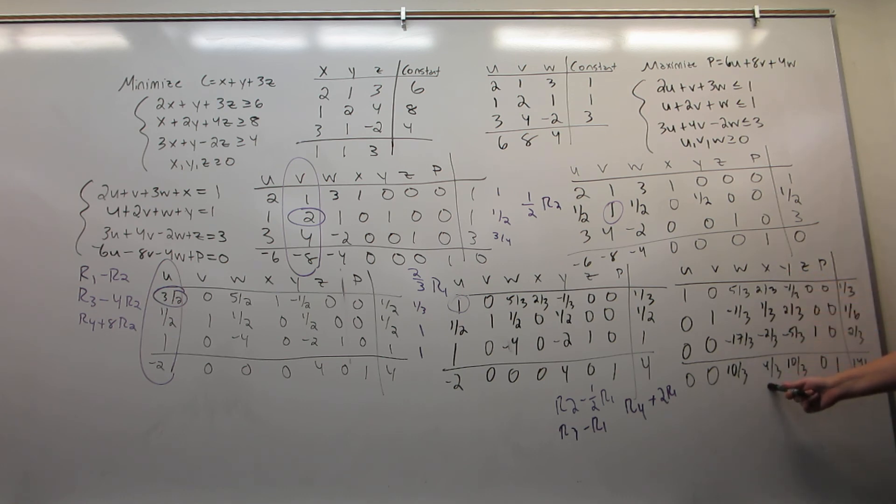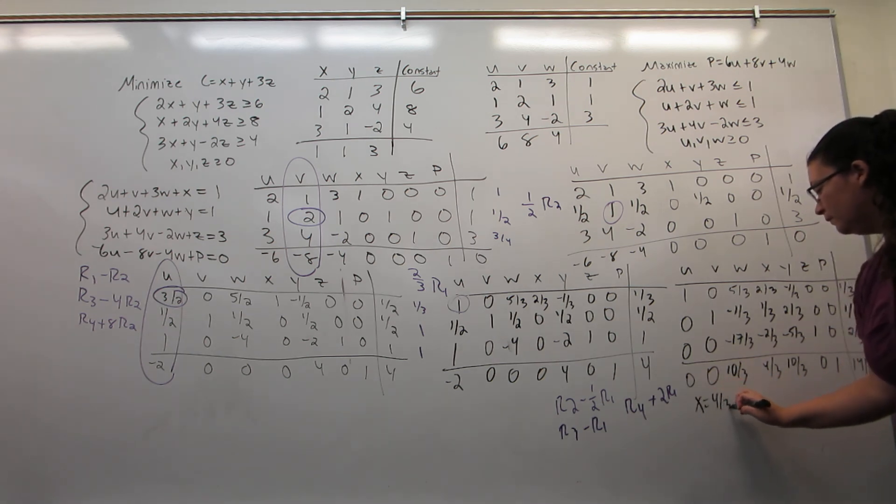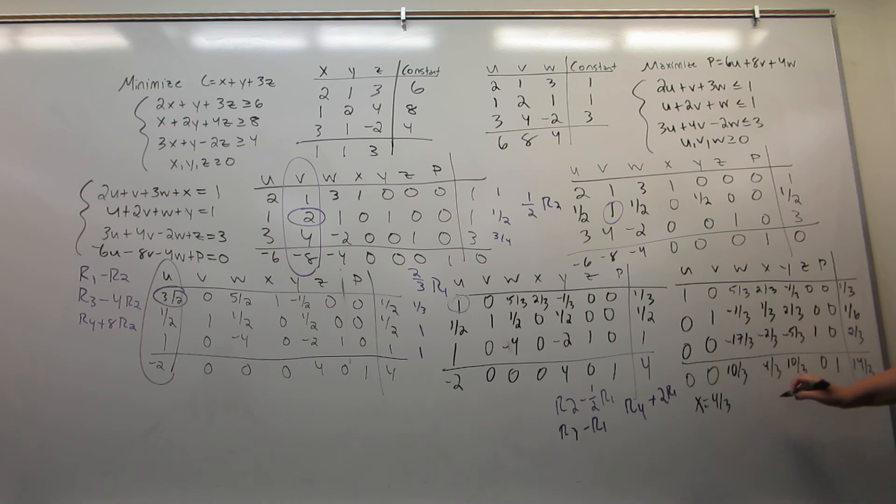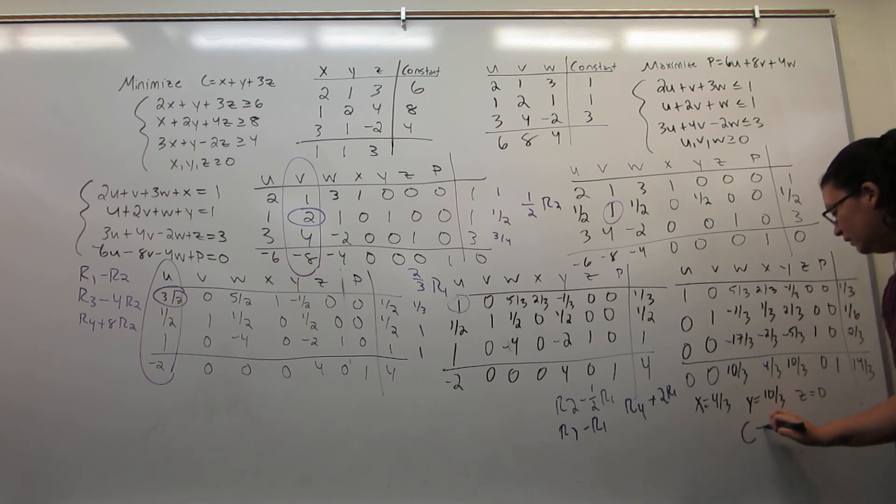x will equal 4 thirds, because that is the number at the very bottom of the x column. y will equal 10 thirds, because that is the number at the very bottom of the y column. z will equal 0, because that is the number at the very bottom of the z column. Now, normally when I was reading this off in a standard way, I'd say that p is 14 thirds. Instead, I'm going to say that c is 14 thirds. Because when you're using the dual method, p and c always end up taking the same value, and it's always that value in the bottom right-hand corner.